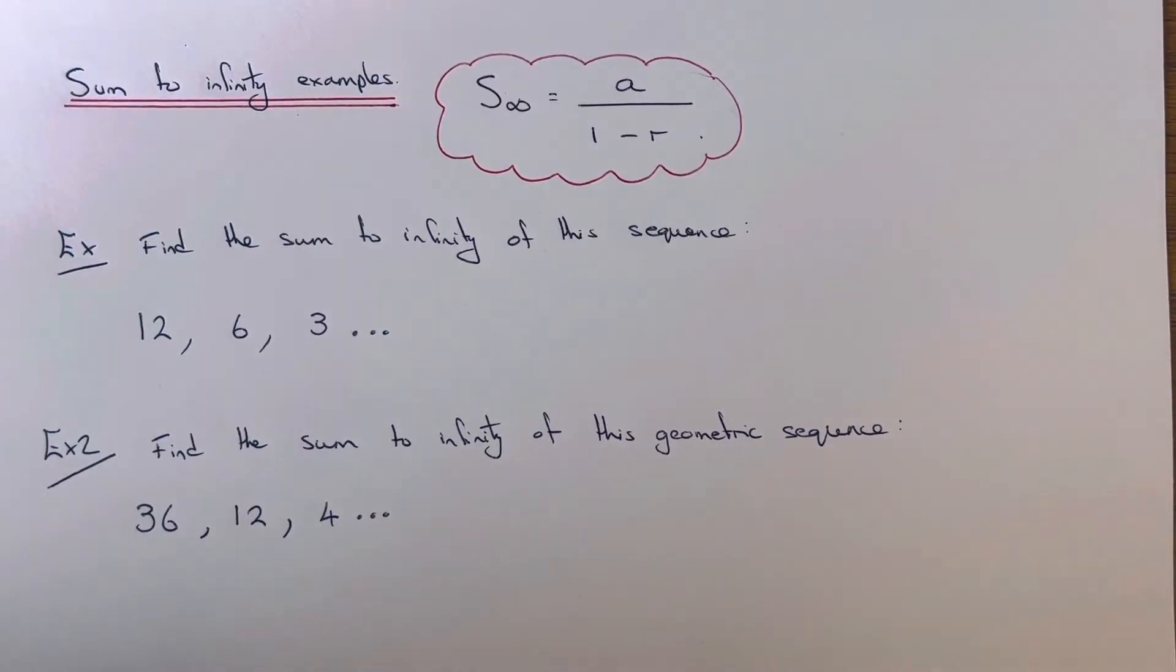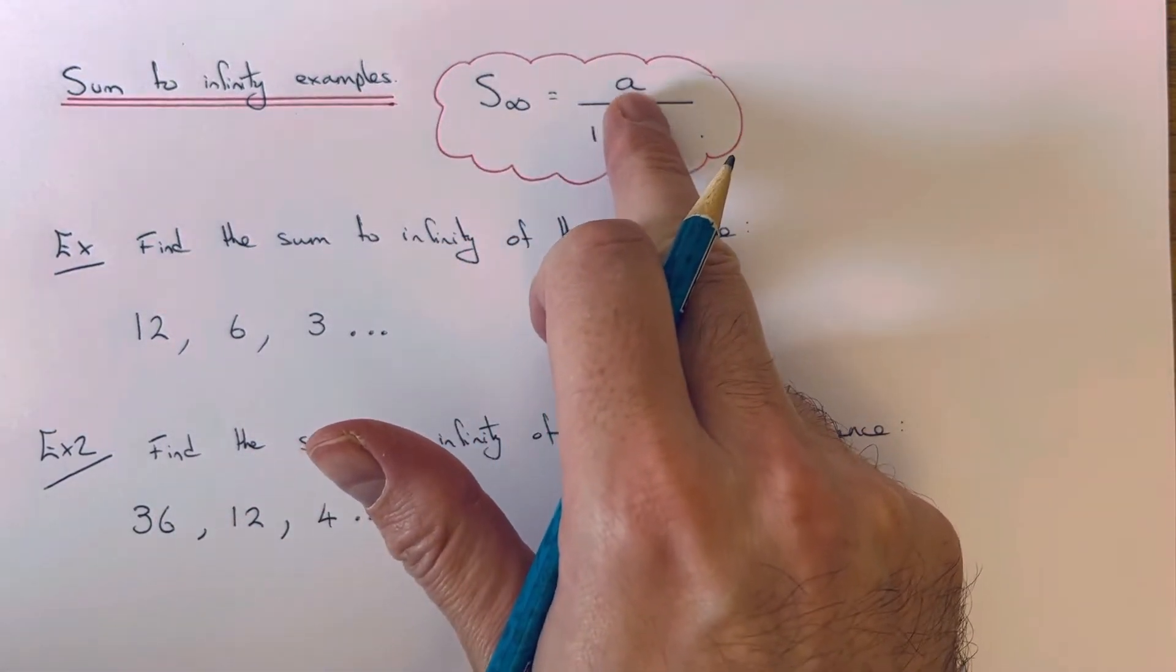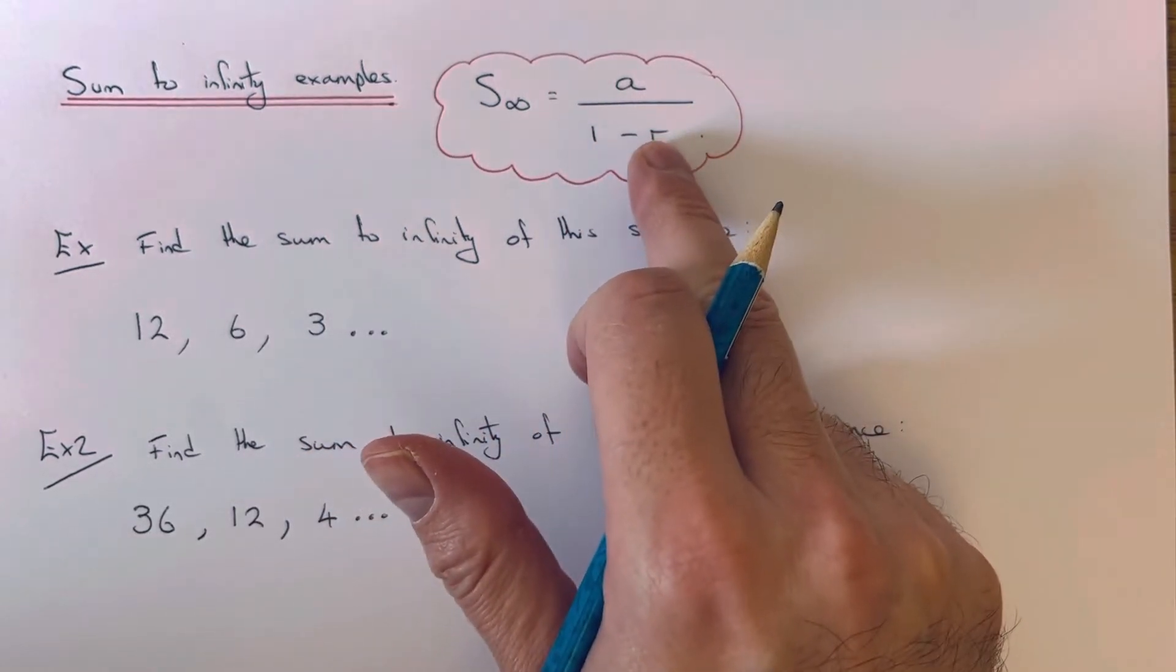Hi guys, welcome back. This is Maths 3000. Today I'm going to show you how to work out the sum to infinity of a geometric sequence. So the formula for working this out is a over 1 minus r.